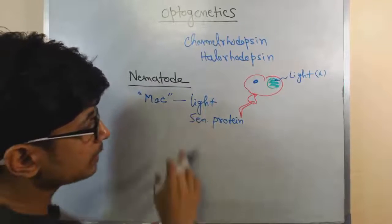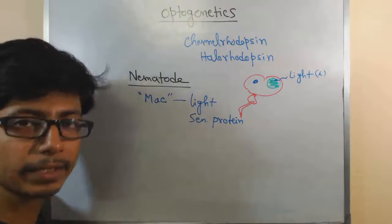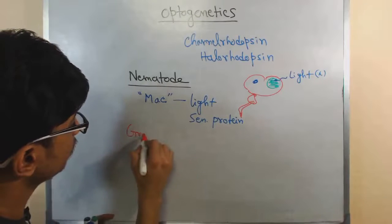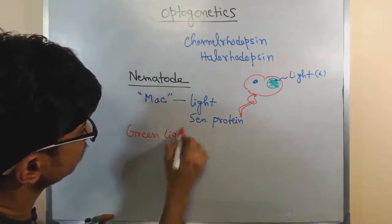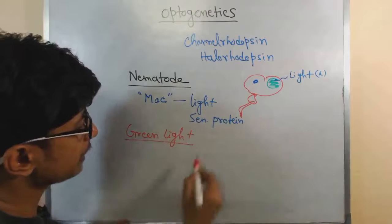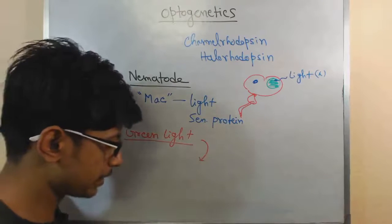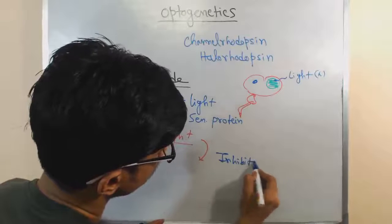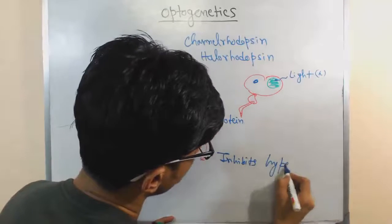Mac is a light sensitive protein which helps in those contraction processes. Once this light sensitive protein is provided with some light, green light, if we apply some green light.